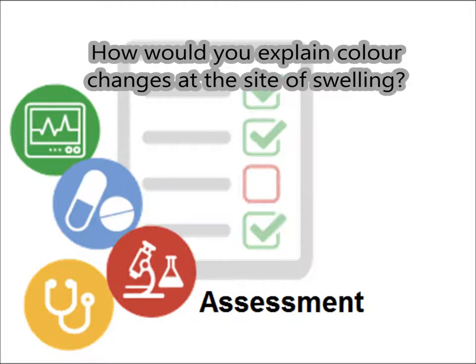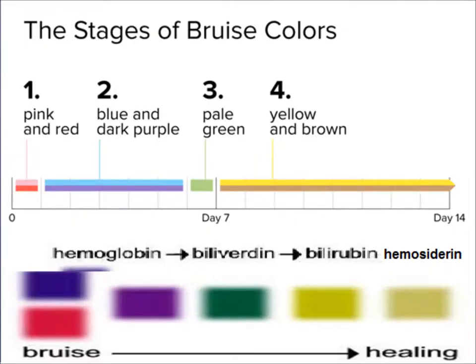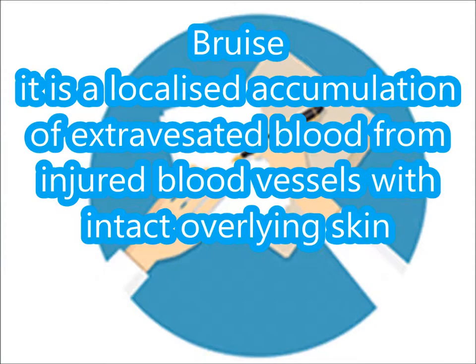How do we explain the color changes at the site of swelling? Whenever there is blood accumulation, there is bluish-red discoloration. The blood is then broken down into heme and protein, then biliverdin is formed, followed by bilirubin, then hemosiderin, and finally hemosiderin is removed by macrophages. A bruise is defined as a localized accumulation of extravasated blood from injured blood vessels with intact overlying skin.